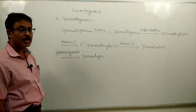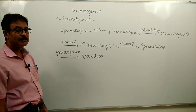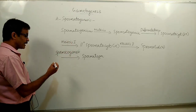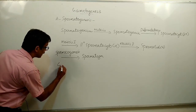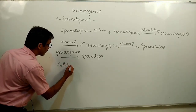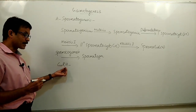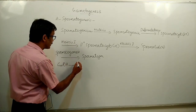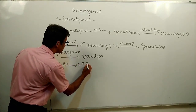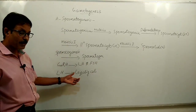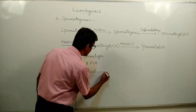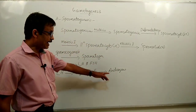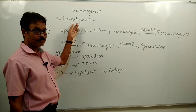Spermiogenesis starts around the age of 13 to 15 during puberty. During that period, spermatogenesis is initiated by the secretion of the hormone GnRH from the hypothalamus. The hypothalamus produces gonadotropin-releasing hormone. This GnRH influences the anterior pituitary, which then produces two types of hormones: LH and FSH. LH influences Leydig cells to produce androgens like testosterone, and this androgen influences spermiogenesis.